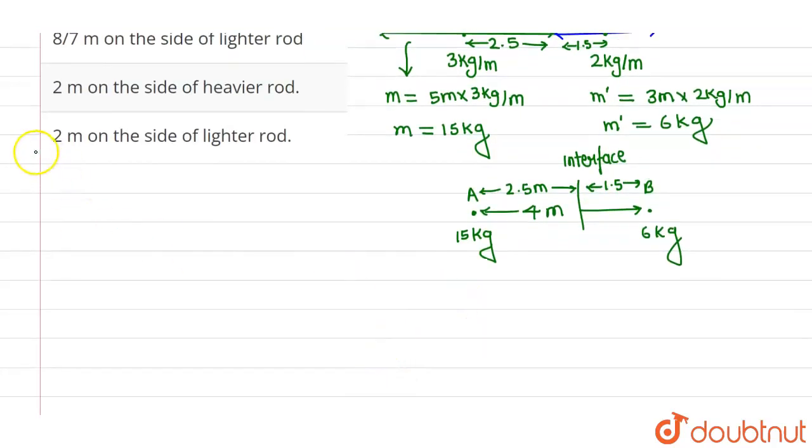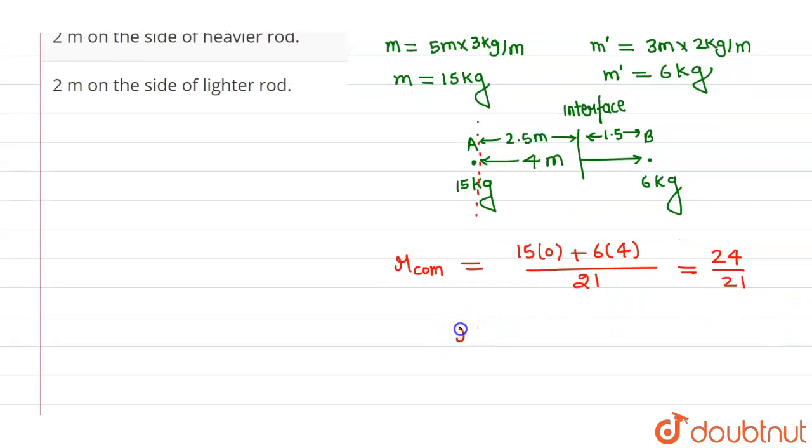So let us calculate the center of mass of this particular system. Center of mass will be at a position of 15kg into its distance. Let us try to find out center of mass with respect to A. So 15 into 0 plus 6 into 4 divided by total mass which is 21. And this will come out to be 24 divided by 21. And this is in meter.